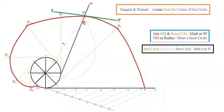With N–N-dash as your base and M as center, draw a 90-degree line towards the left and right. You will get your tangent, which should touch only one point on the curve. T–T-dash is your tangent.